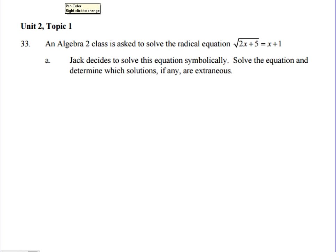An Algebra 2 class is asked to solve the radical equation: the square root of 2x plus 5 equals x plus 1. Jack decides to solve this equation symbolically — solve the equation and determine which solutions, if any, are extraneous.